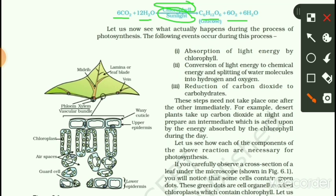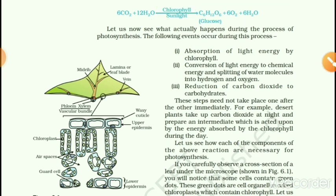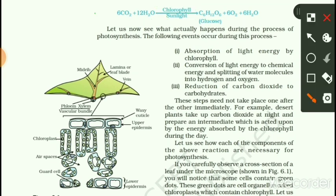Now we will see the photosynthesis equation. Please remember this. This is 6CO2 plus 12H2O with chlorophyll and sunlight. Carbon dioxide and water are the important reactants in this reaction, and the products are glucose, oxygen, and water.